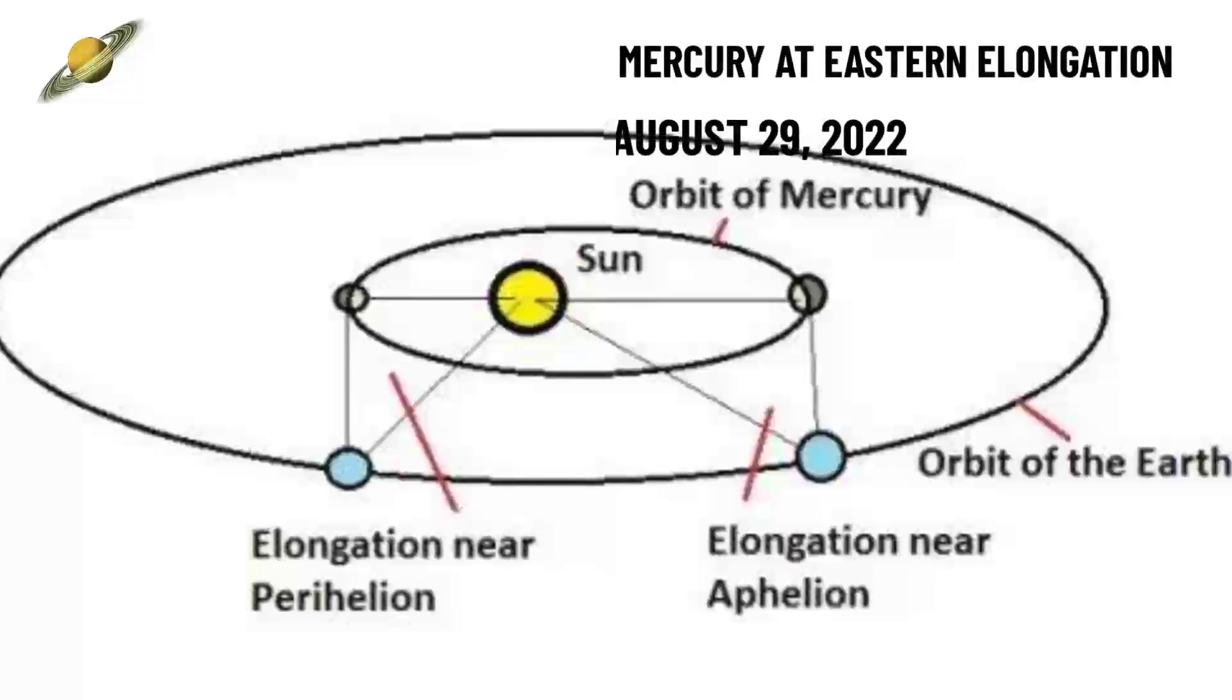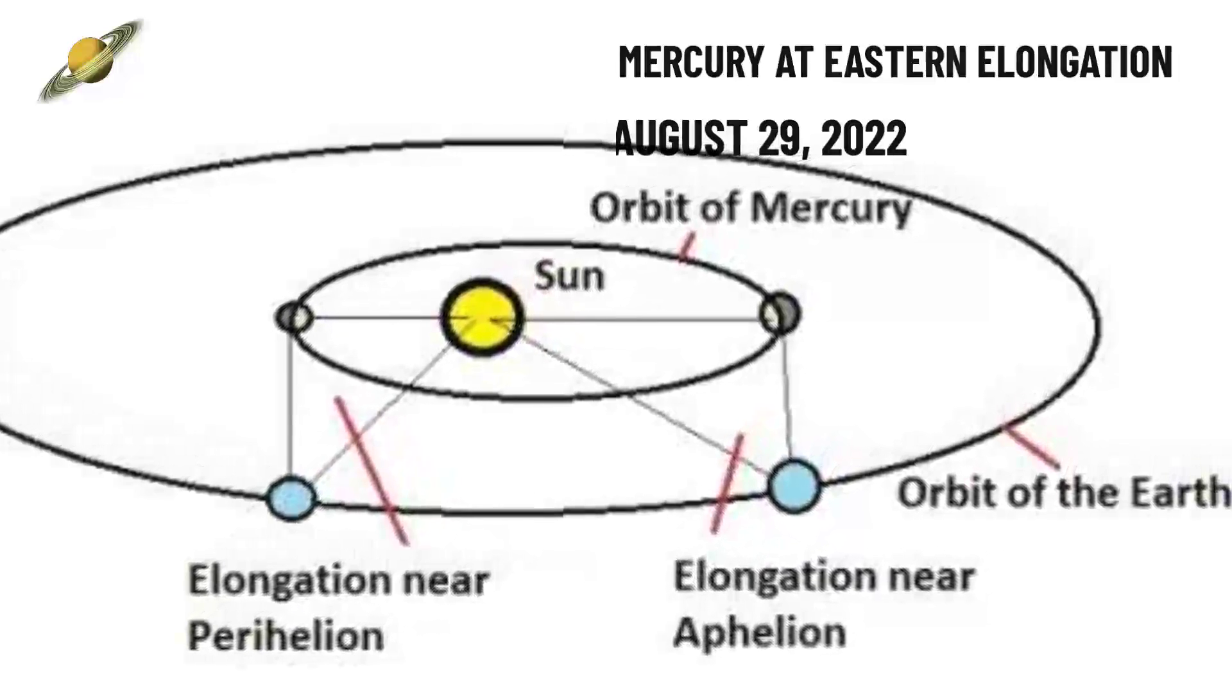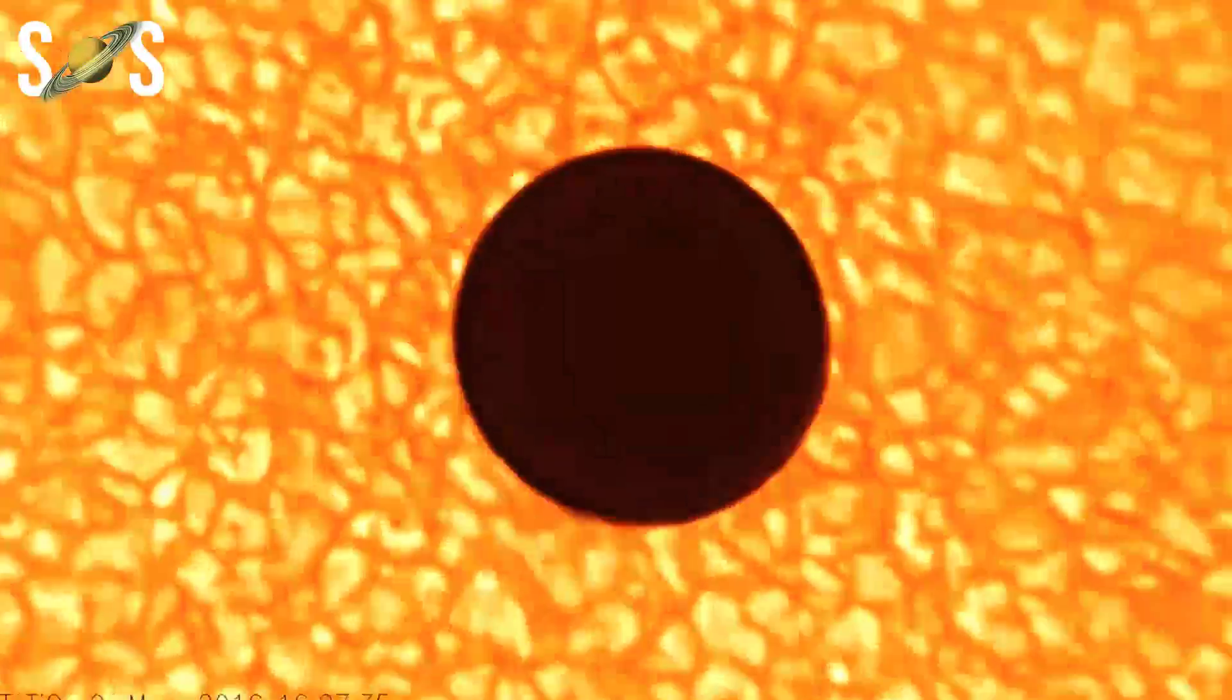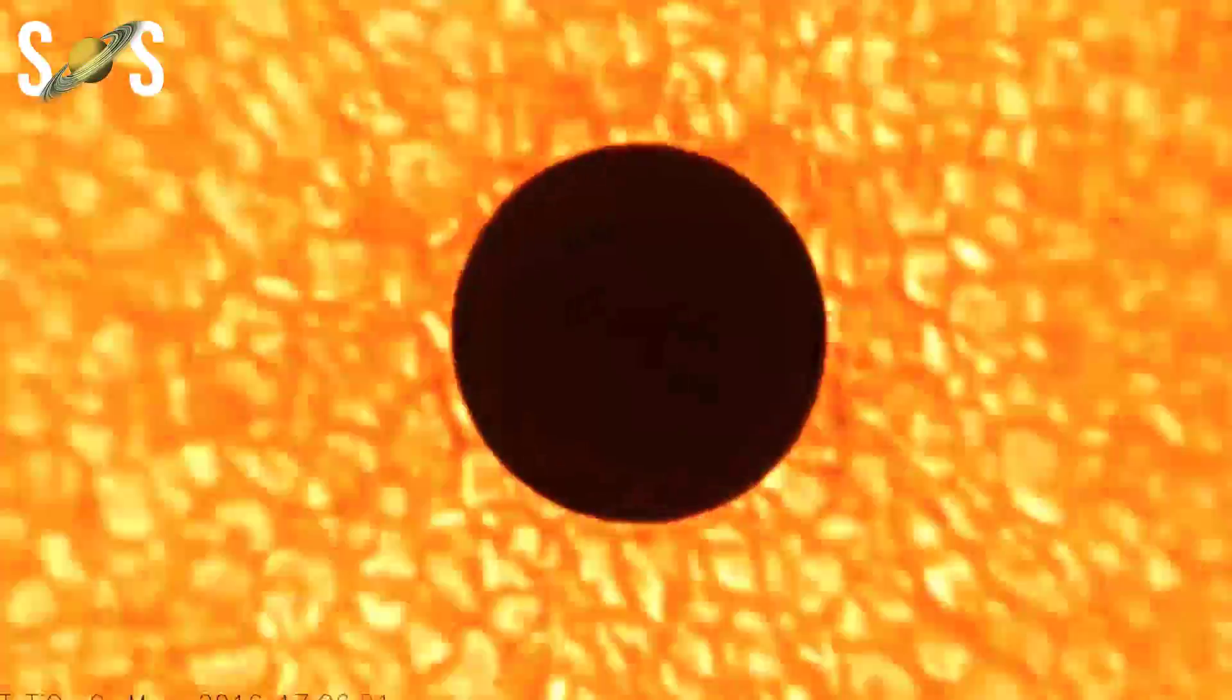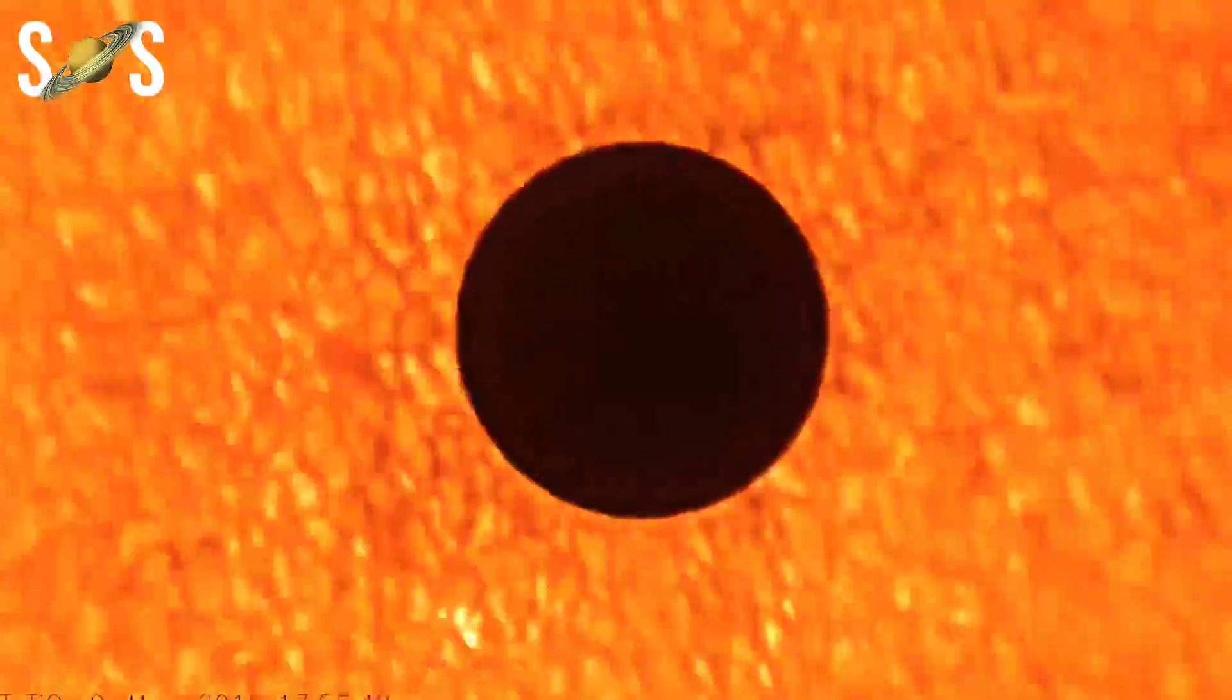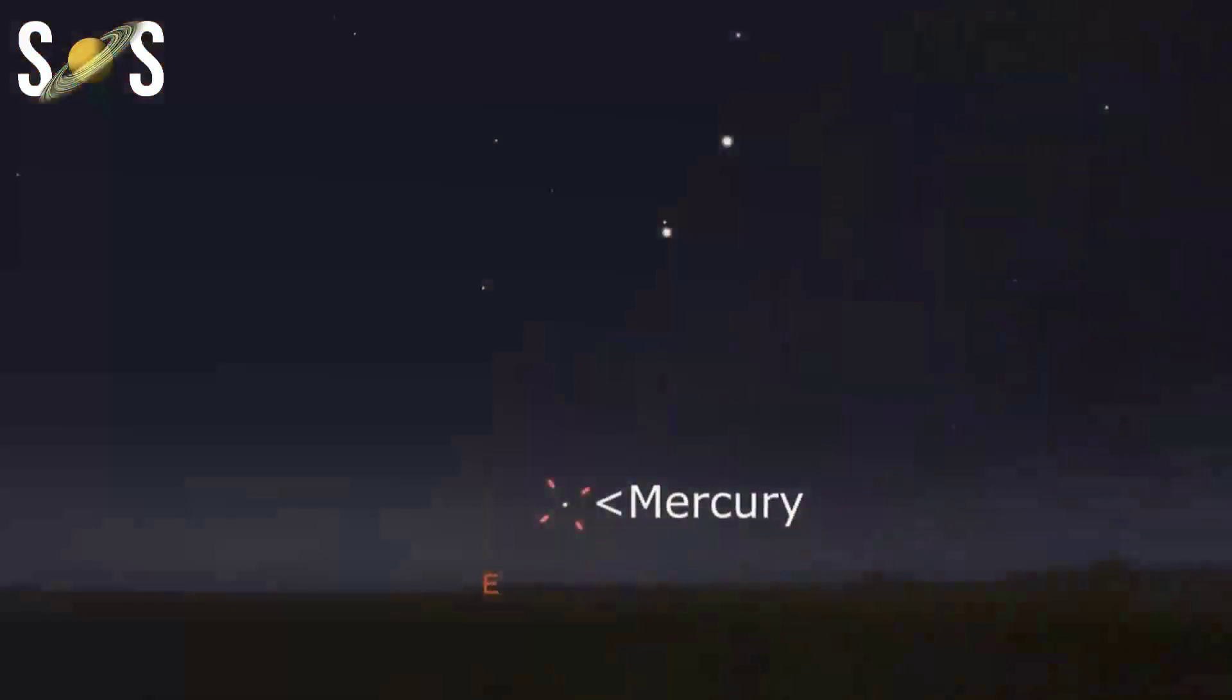August 29th: Mercury at greatest elongation east. Mercury will reach its greatest separation from the sun in its July to September 2022 evening apparition. It will be shining brightly at magnitude 0.2. Mercury will fade rapidly towards the end of the apparition as it heads towards inferior conjunction, when it will pass between the Earth and sun. At inferior conjunction, the planet turns its unilluminated side towards the Earth and so appears as a thin, barely illuminated crescent.